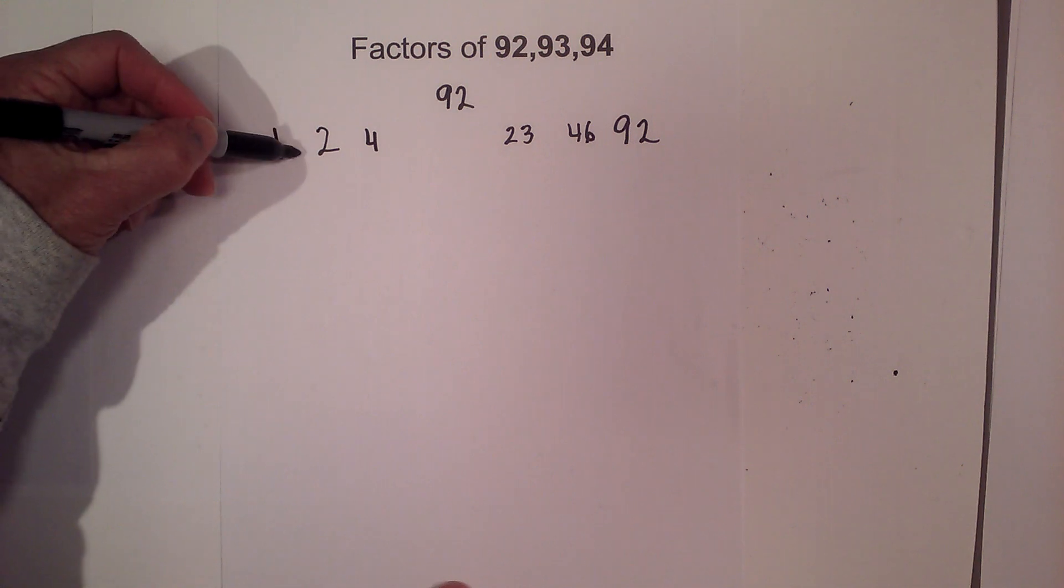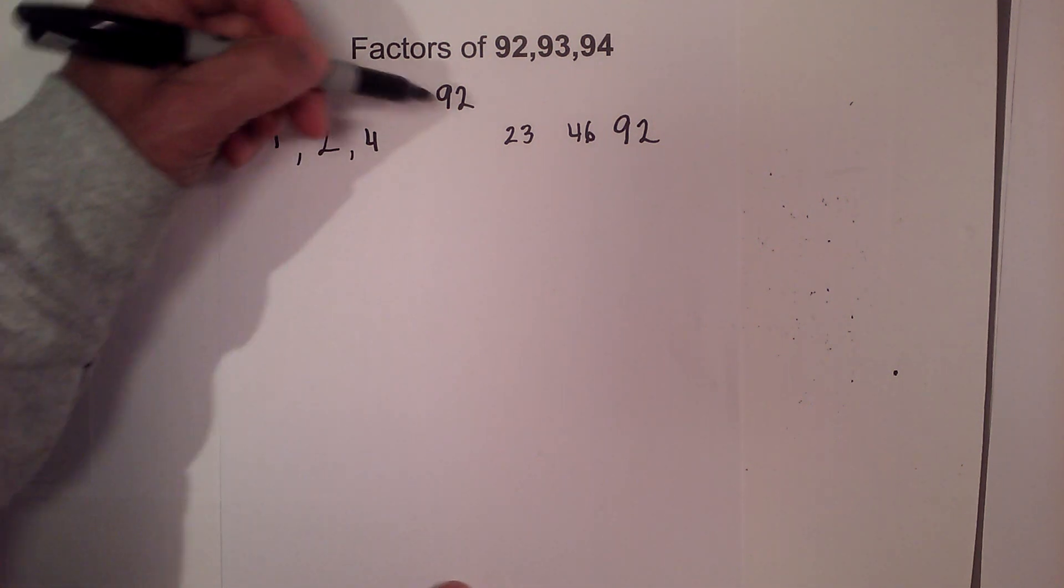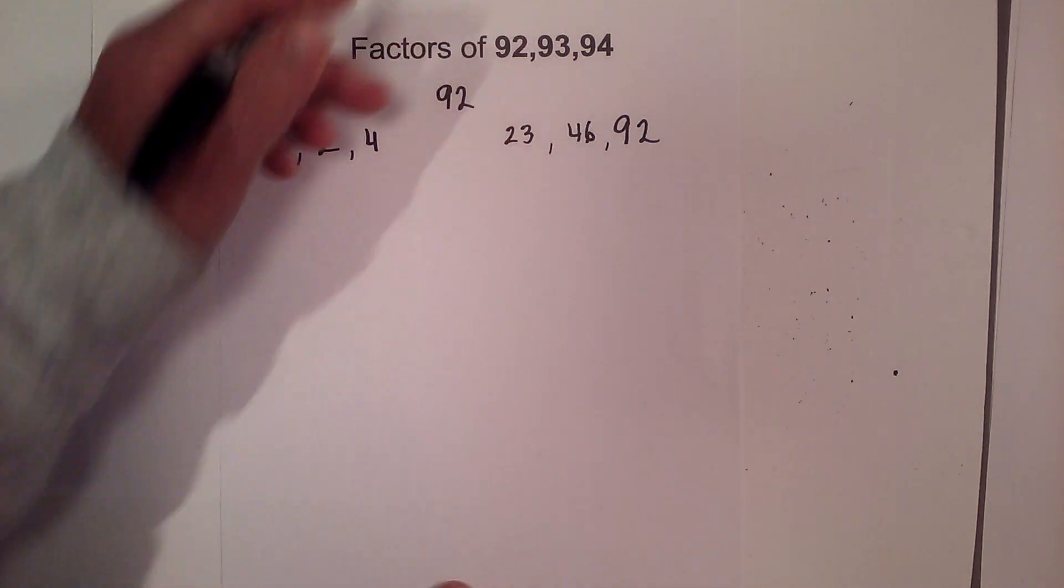So the factors of 92 are 1, 2, 4, 23, 46, and 92.